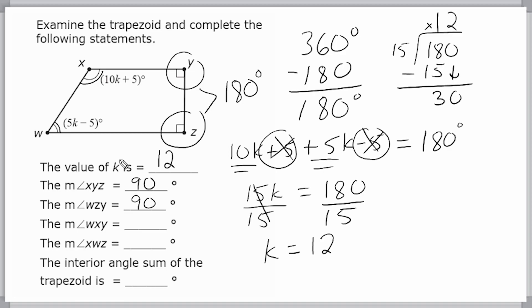Now, that's going to allow us to find the measure of wxy, which is this angle right here. Now, we can see that wxy is represented by this expression here, 10k plus 5. So what we're going to do is take that expression, and we're going to replace k with 12 because k is equal to 12.